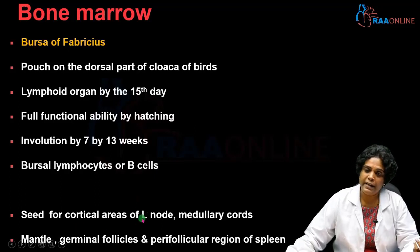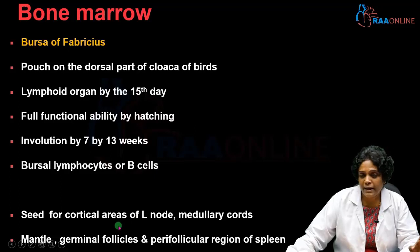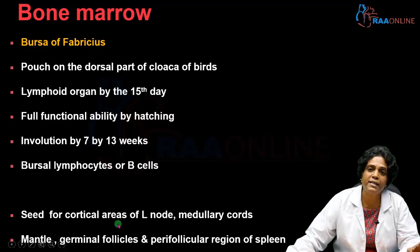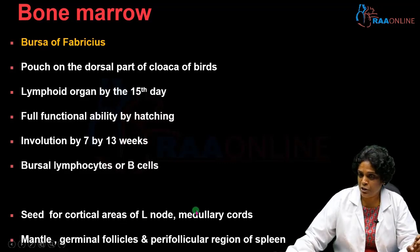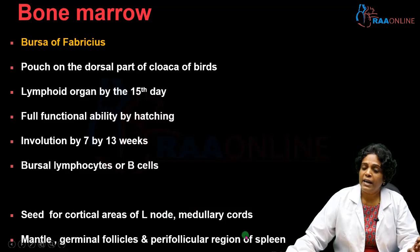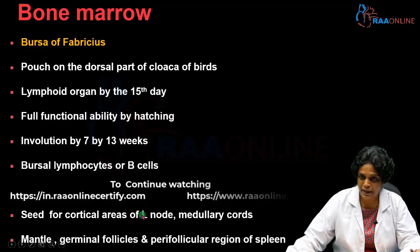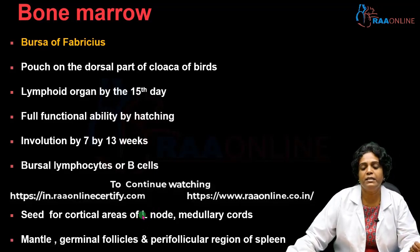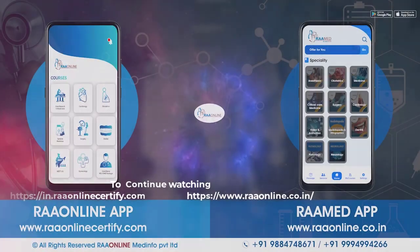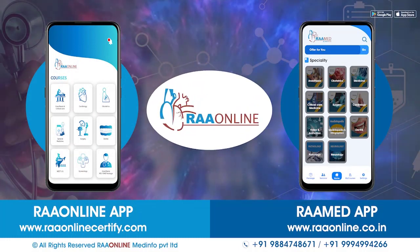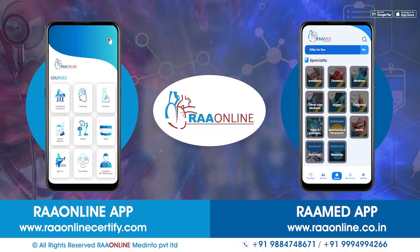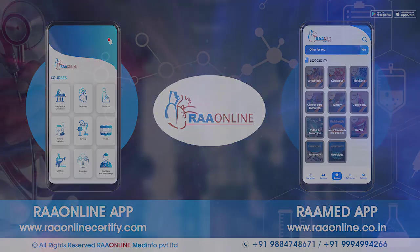In the lymph node, the cortical area is called the Bursa cell-dependent area or B cell-dependent area, as well as the medullary cords. In the spleen, the mantle, the germinal follicles, and the peripheral region are called the Bursa-dependent areas. These regions are very rich in B lymphocytes or Bursa cell lymphocytes.